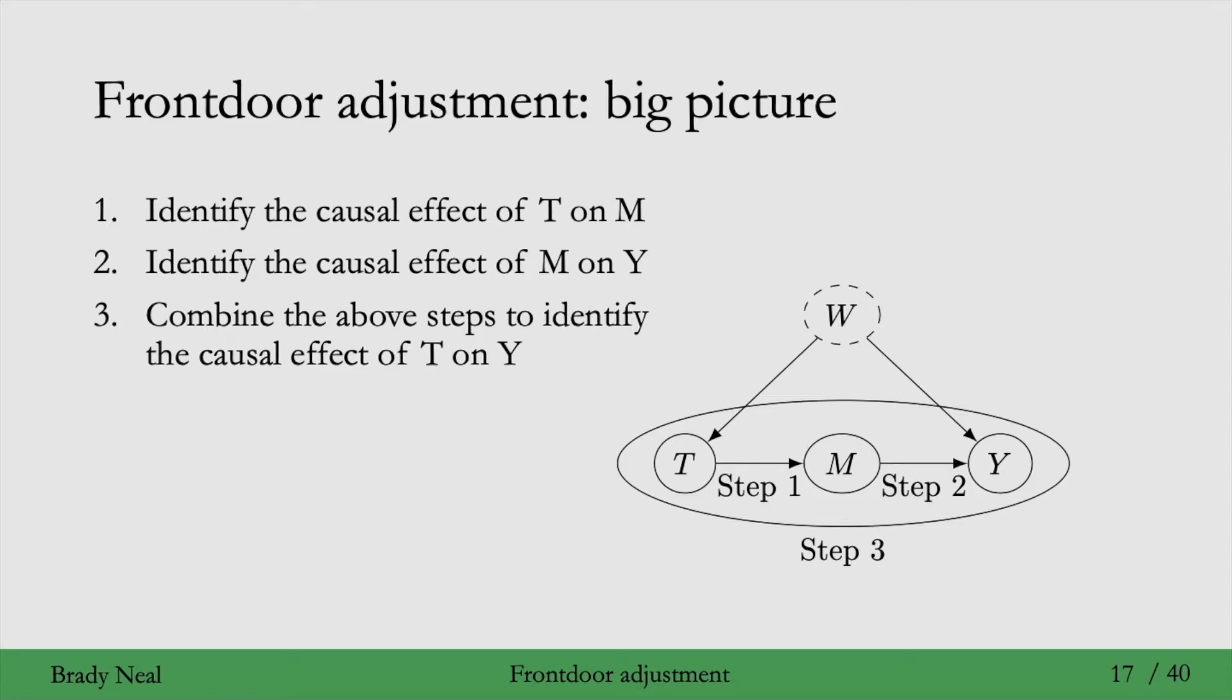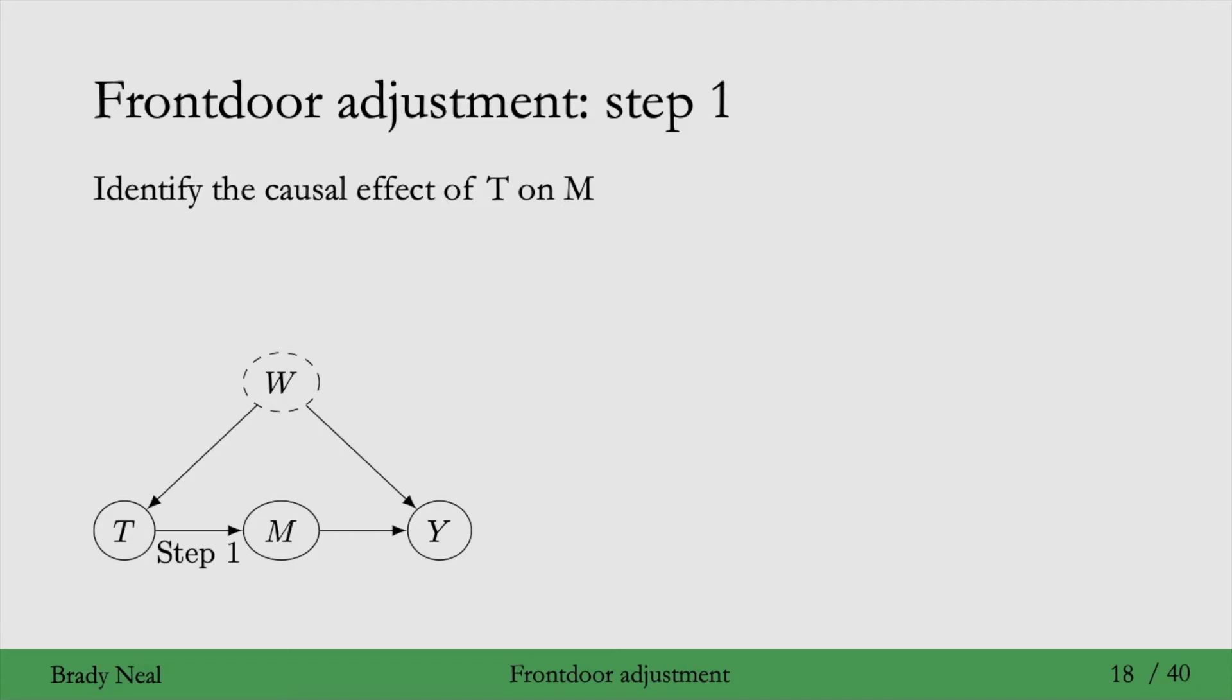We'll take this step by step. The first step is to identify the causal effect of T on M. That means we want to take this quantity P of M given do T, and turn this into an expression that doesn't have do operators in it. It turns out that in this graph, there are no backdoor paths from T to M. That's because Y is a collider on the path T to W to Y to M. So because the collider Y blocks that backdoor path, we have that this is just equal to P of M given T. That's all there is to step one.